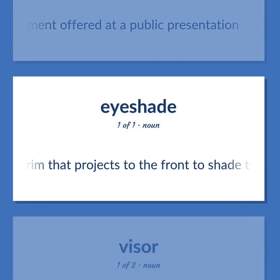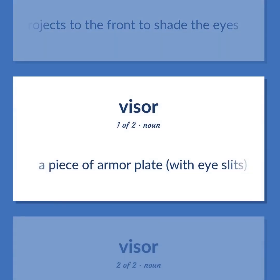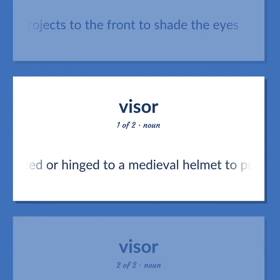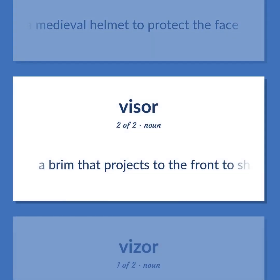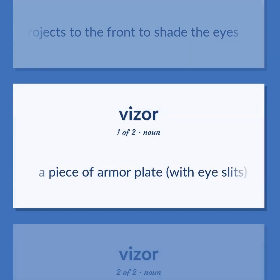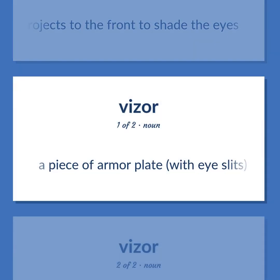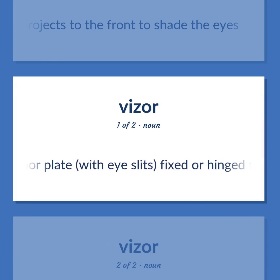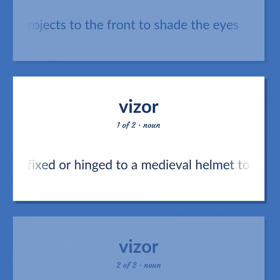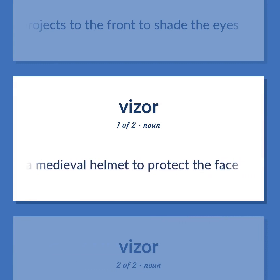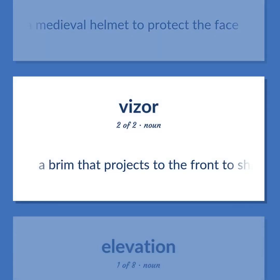Visor: A brim that projects to the front to shade the eyes. A piece of armor plate, with isolates, fixed or hinged to a medieval helmet to protect the face. A brim that projects to the front to shade the eyes. A piece of armor plate, fixed or hinged to a medieval helmet to protect the face. A brim that projects to the front to shade the eyes.